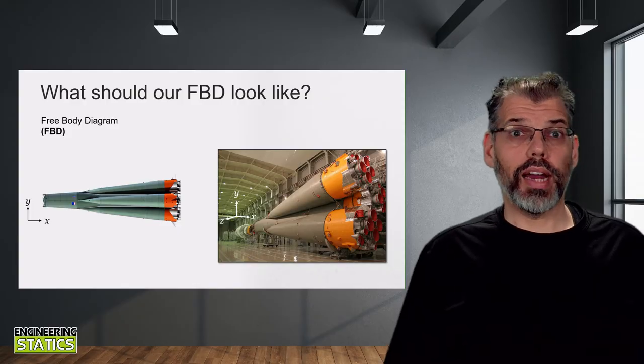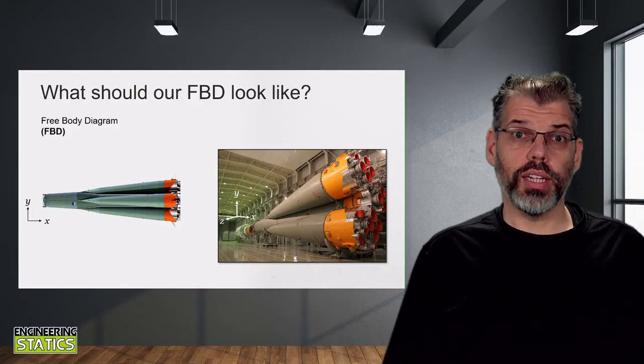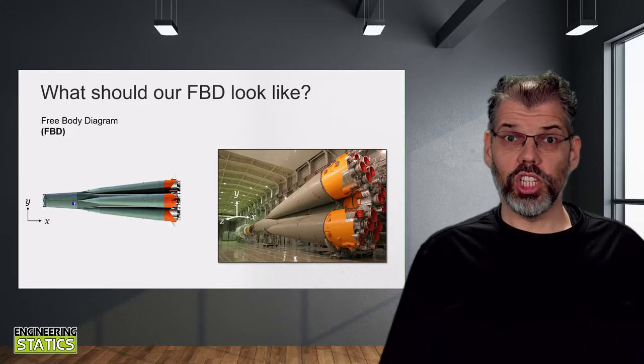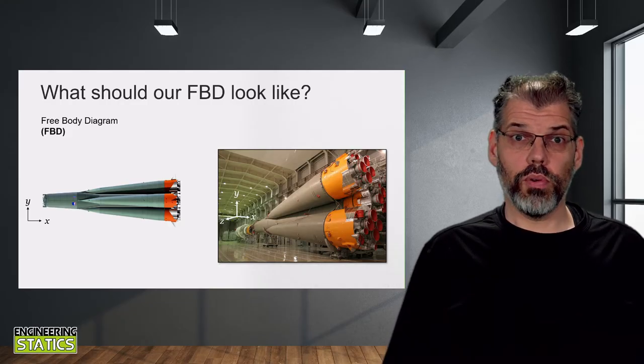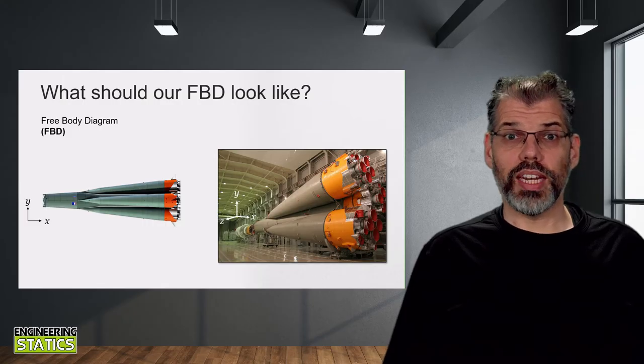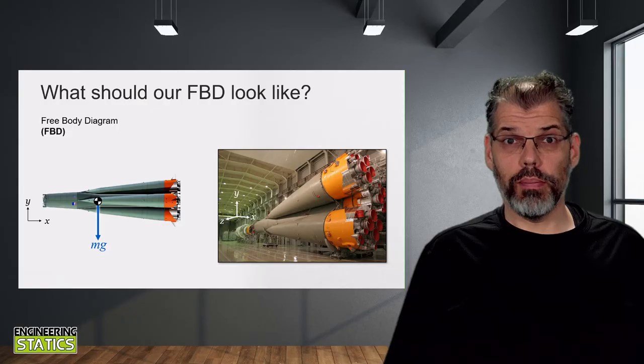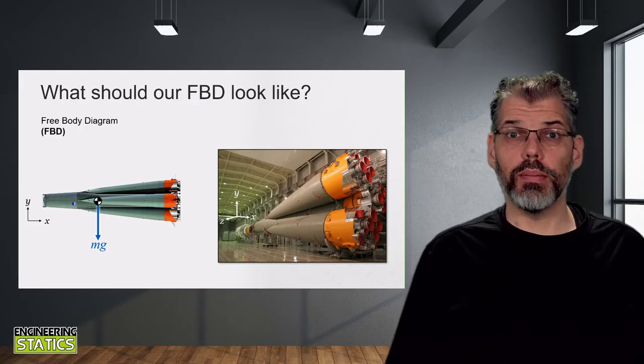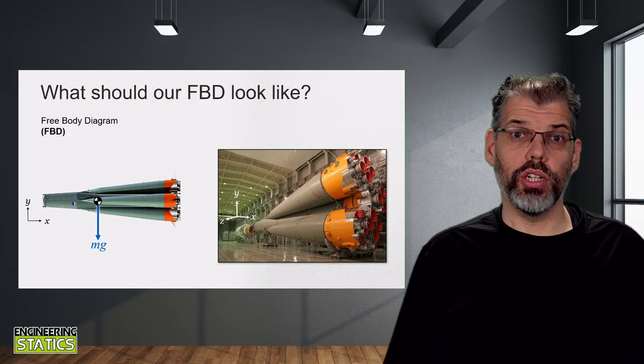Next, we need to start adding the interactions between our rocket and the environment we cut away. We can observe the rocket will have a large mass that would generate a non-negligible body force, its weight. So we can add that to our free-body diagram by including a force at its centre of mass equal to the mass of the rocket M multiplied by the gravitational acceleration G.